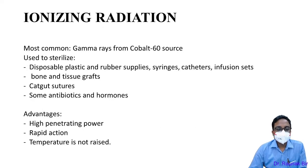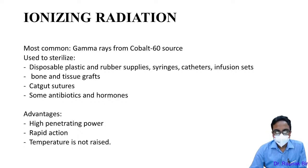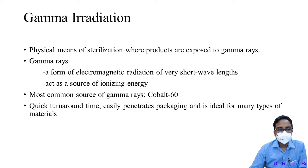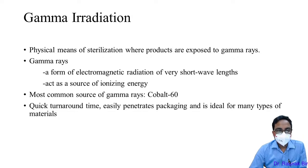Ionizing radiation most commonly uses gamma rays; the source is cobalt-60, a radioactive isotope. Sterilization is used for disposable plastic and rubber supplies like single-use syringes, catheters, infusion sets, bone and tissue grafts, sutures, and some heat-sensitive antibiotics and hormones. Advantages: very high penetrative power, rapid action, less time required, and it is a cold method — temperature is not required.